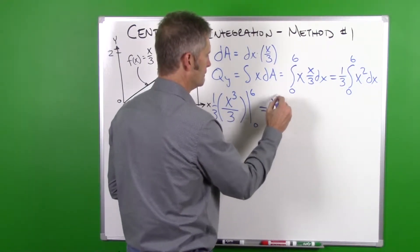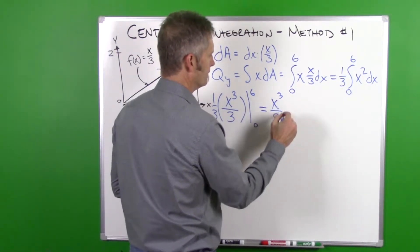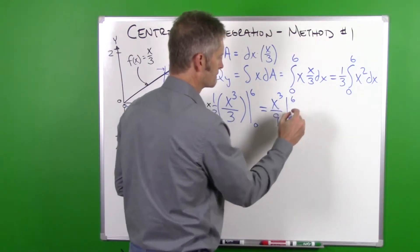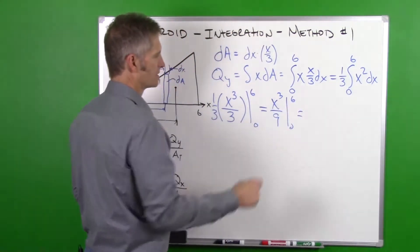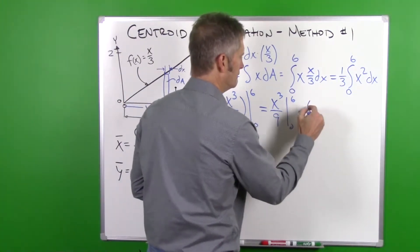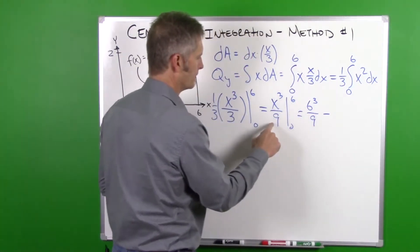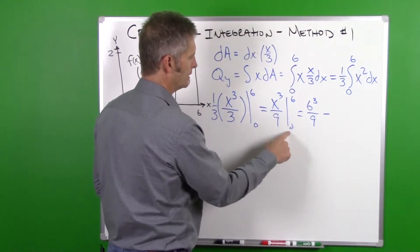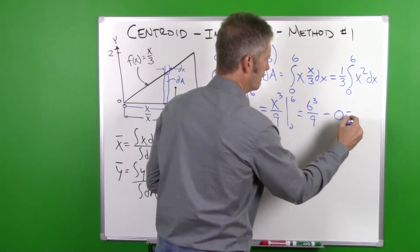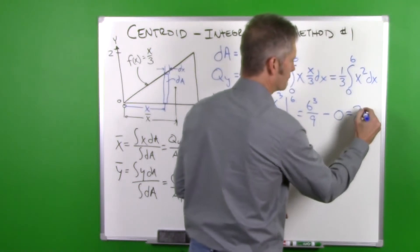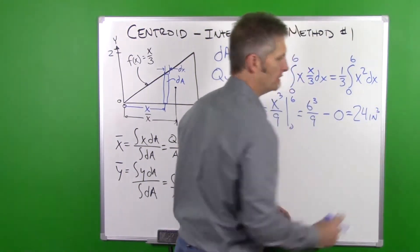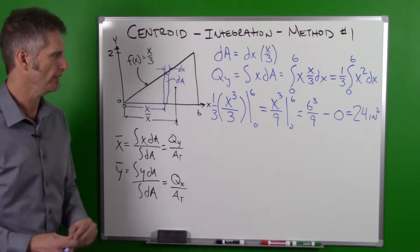So we get x cubed divided by 9 evaluated from 0 to 6. If we plug in our 6, we get 6 cubed divided by 9 minus when we plug 0 in here we get 0, and we get 24 inches cubed. That is our qy.